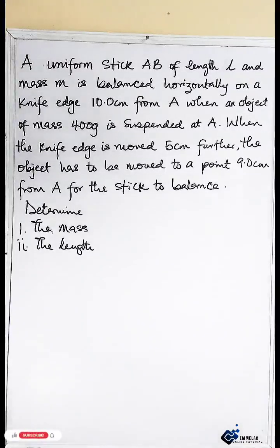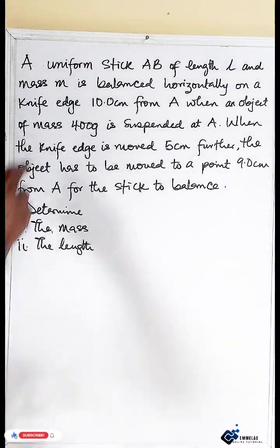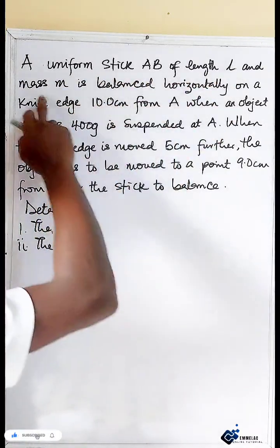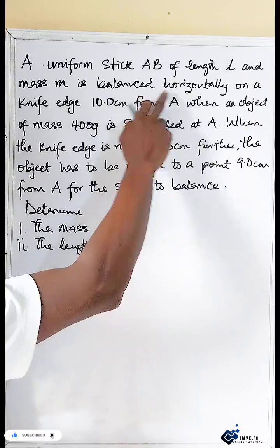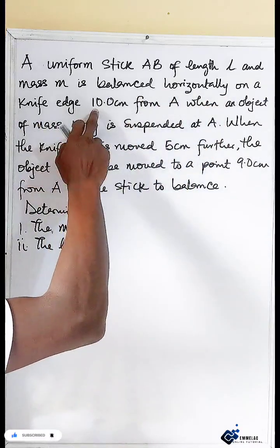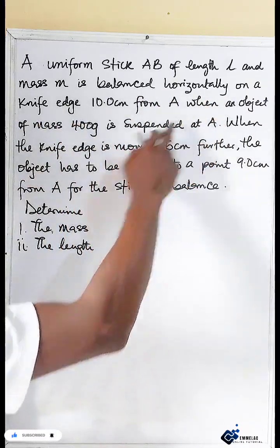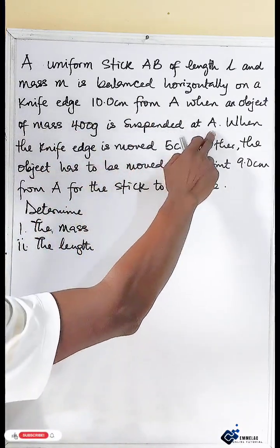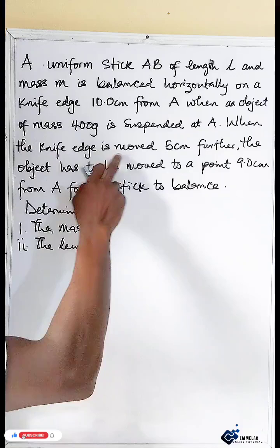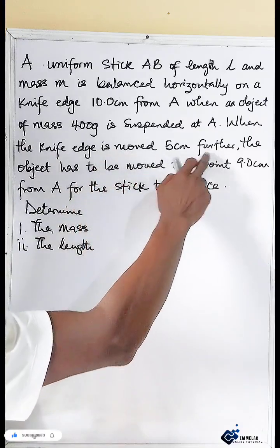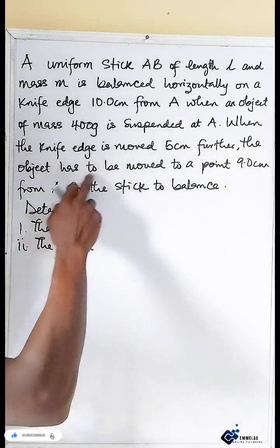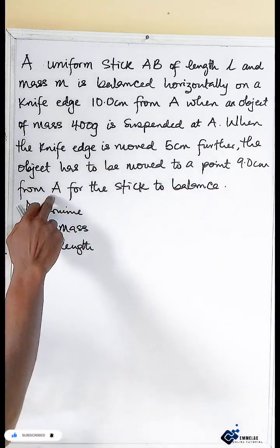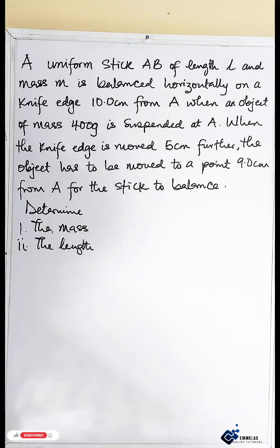Welcome to Emilaq online tutorial. Let us look at this physics question. It says that a uniform stick AB of length L and mass M is balanced horizontally on a knife edge 10 cm from A when an object of mass 400 grams is suspended at A. When the knife edge is moved 5 cm further, the object has to be moved to a point 9.0 cm from A for the stick to be balanced.